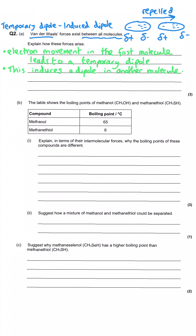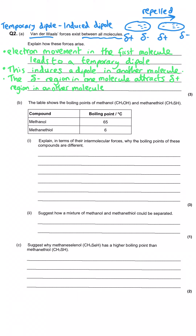For the first two marks we just need to say that electron movement in the first molecule, or a temporary dipole, induces a dipole in the second molecule. For the final mark, similarly to the previous question, we need to say there is an attraction between the electron-rich delta-negative region in one molecule and the electron-deficient region in an adjacent molecule — this happens across all molecules that are near to each other.